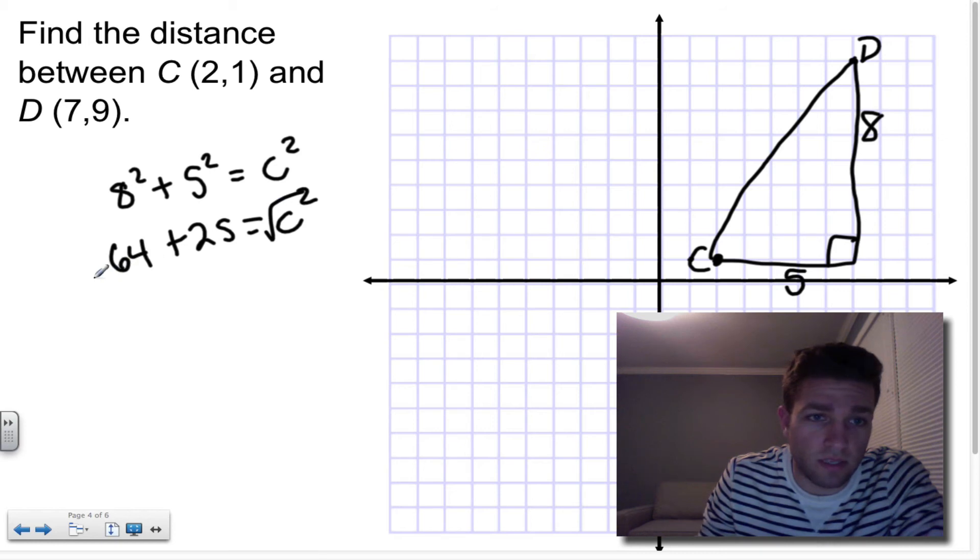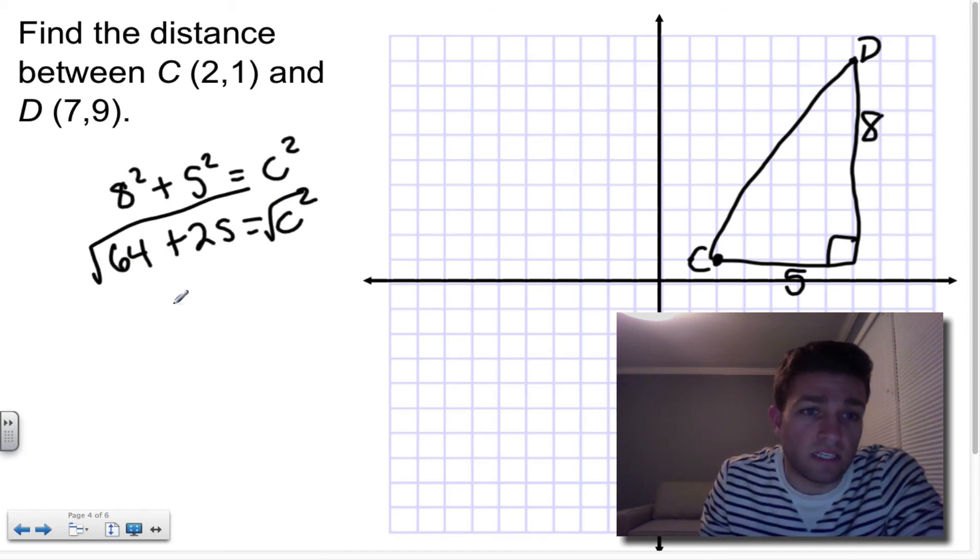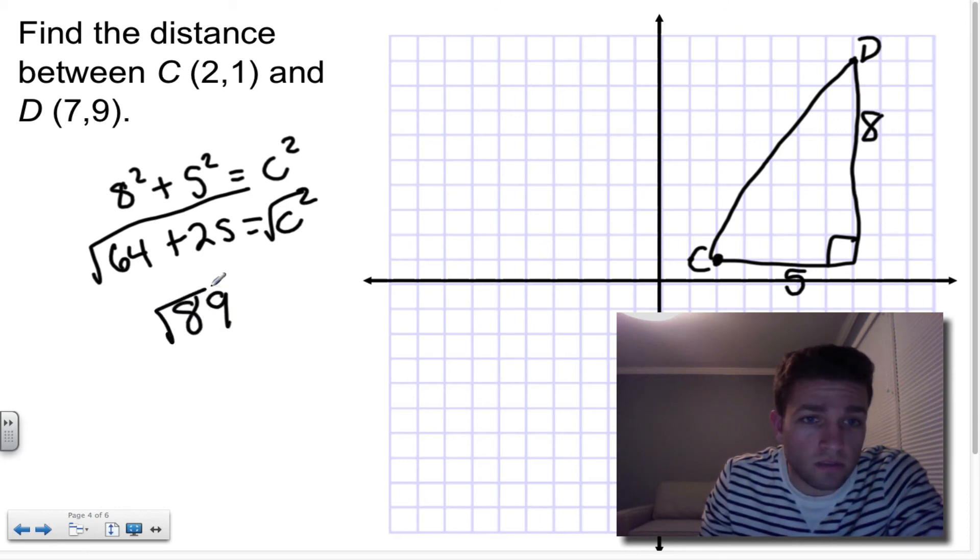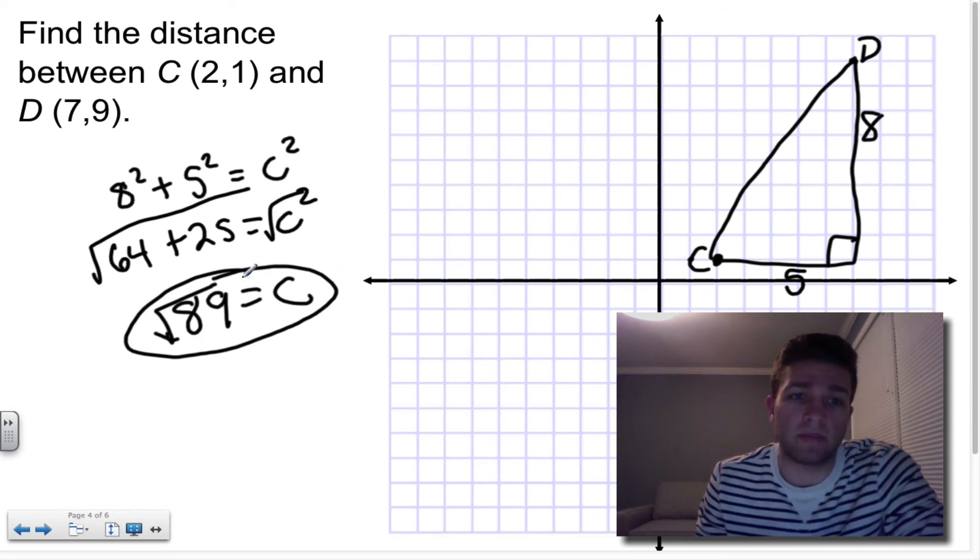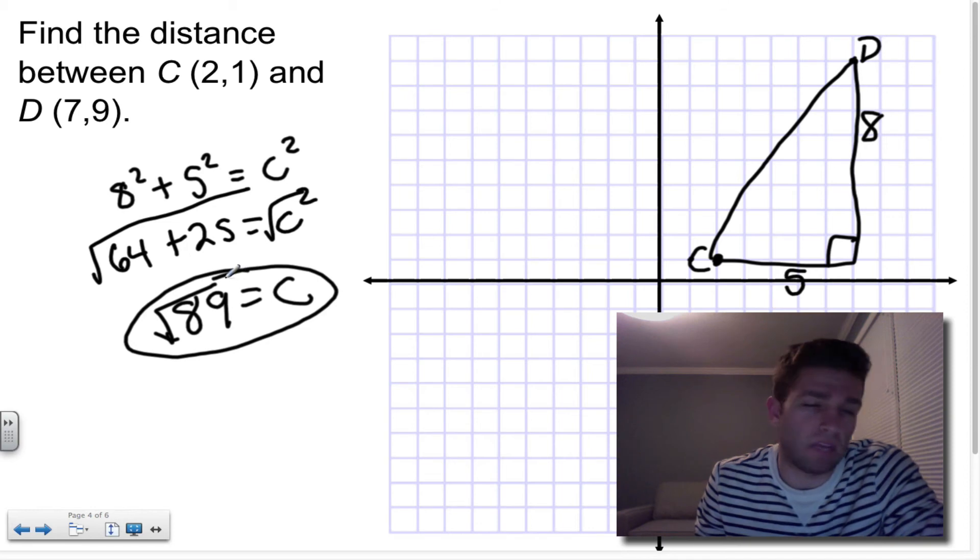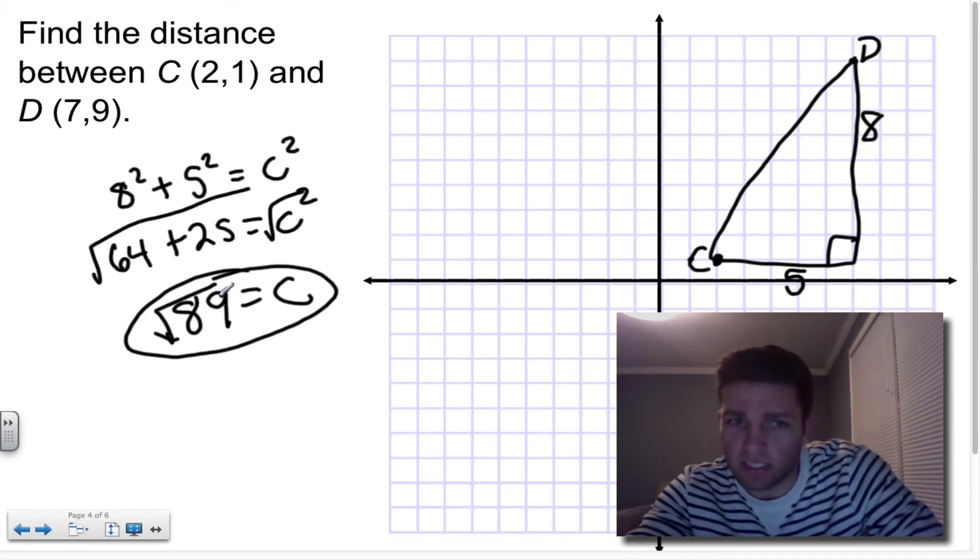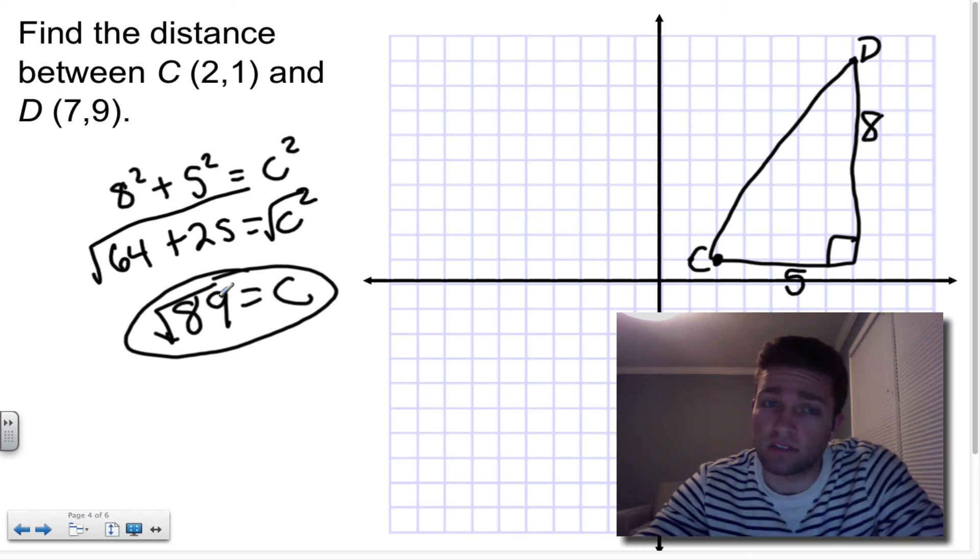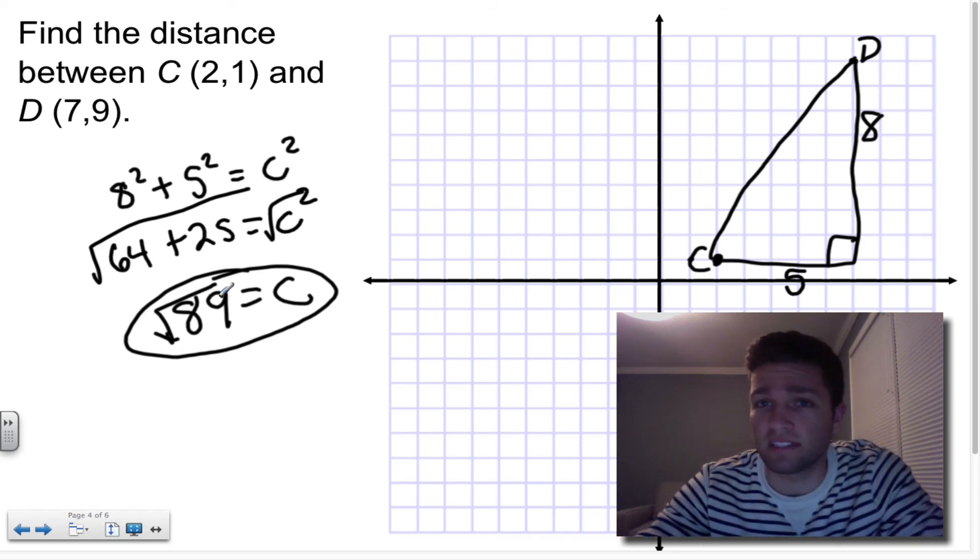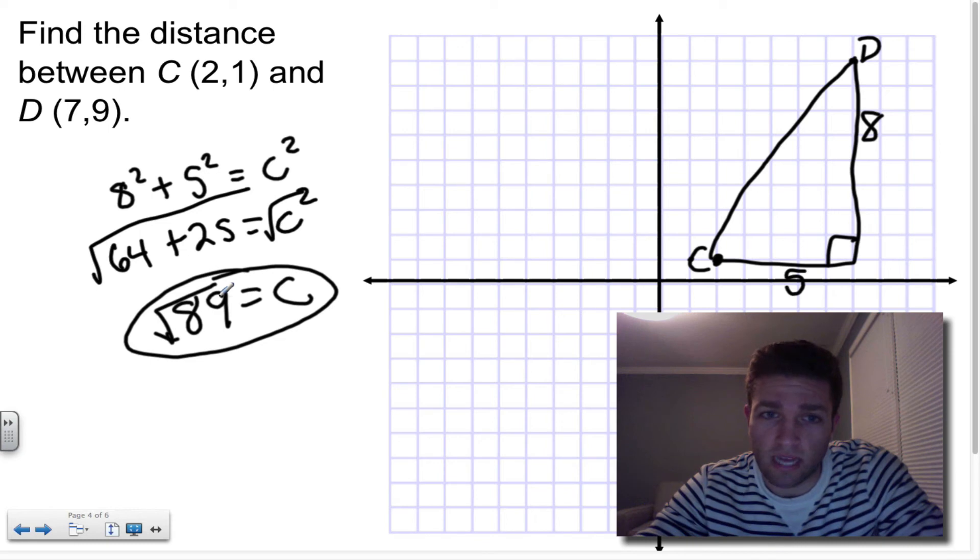Square root both sides. After you add them together, obviously 64 plus 25 is 89. So the square root of 89 is equal to C. And that's going to be eight point something. You can just plug it into your calculator and get the exact answer.